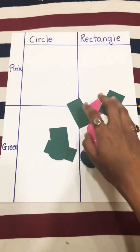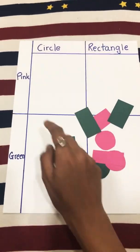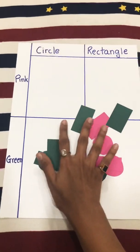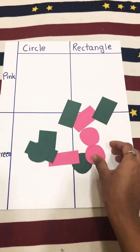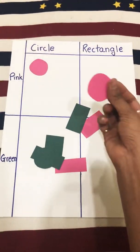All we need to do is sort the data according to the columns. The first column says pink and circle. Let's find the pink circles from here. I have the first circle, which I am going to place here, and the second one here.